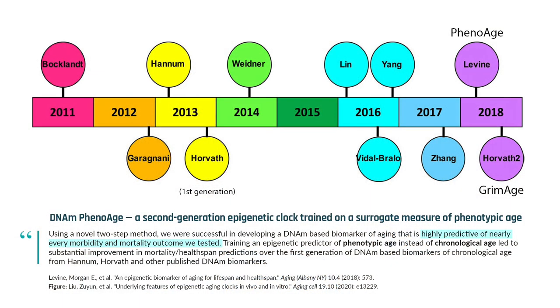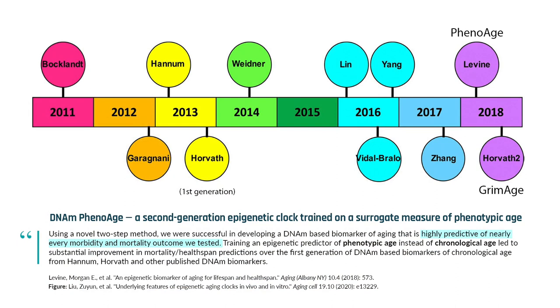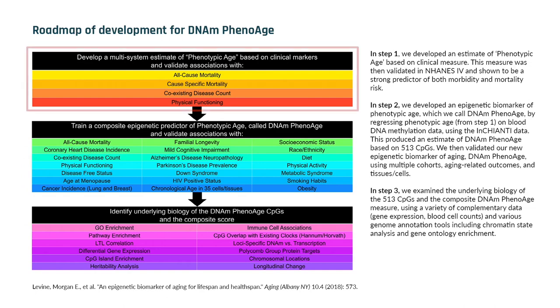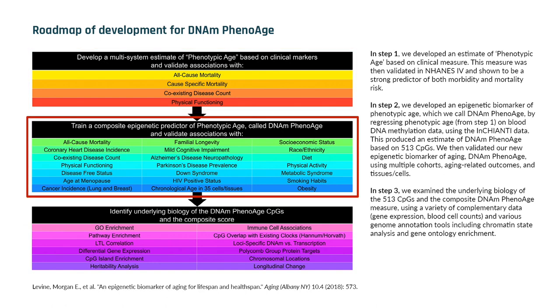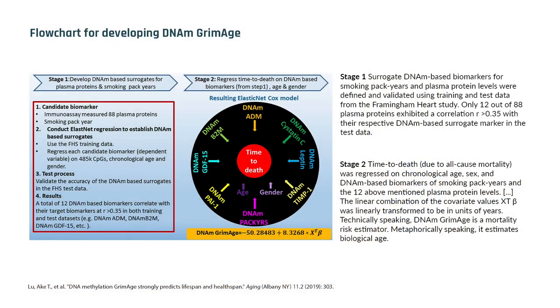What the second-generation clocks did — and the one we published in 2018 was the first example — is we said, can we come up with a better target to tune these measures to? In that case, we used normal lab tests combined into a measure predictive of mortality, then trained a predictor of those lab tests. A similar thing was done with the GrimAge clock, where they took different proteins, trained predictors of those, and then trained a predictor of mortality.